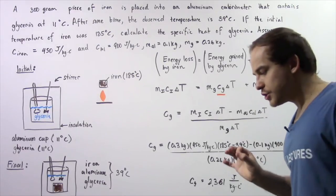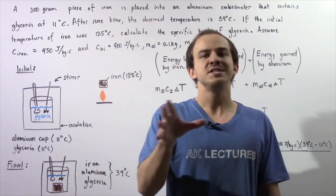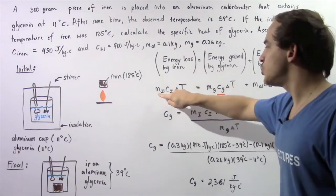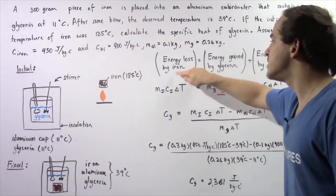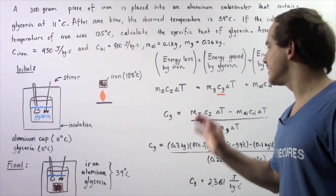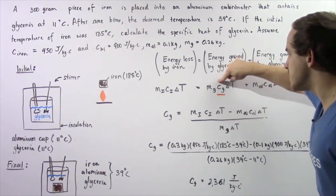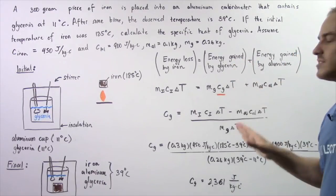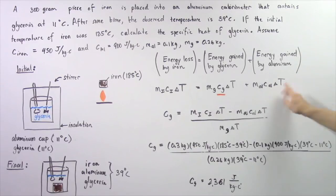We know that the equation for heat loss or energy loss, Q, is equal to the product of the mass of the substance, the specific heat, and the change in temperature. So the energy lost by the iron equals Mi times Ci times delta T for iron. This equals the energy gained by the glycerin — mass of glycerin times specific heat of glycerin (what we're looking for) times delta T of glycerin — plus the energy gained by the aluminum: mass of aluminum times specific heat of aluminum times delta T of aluminum.